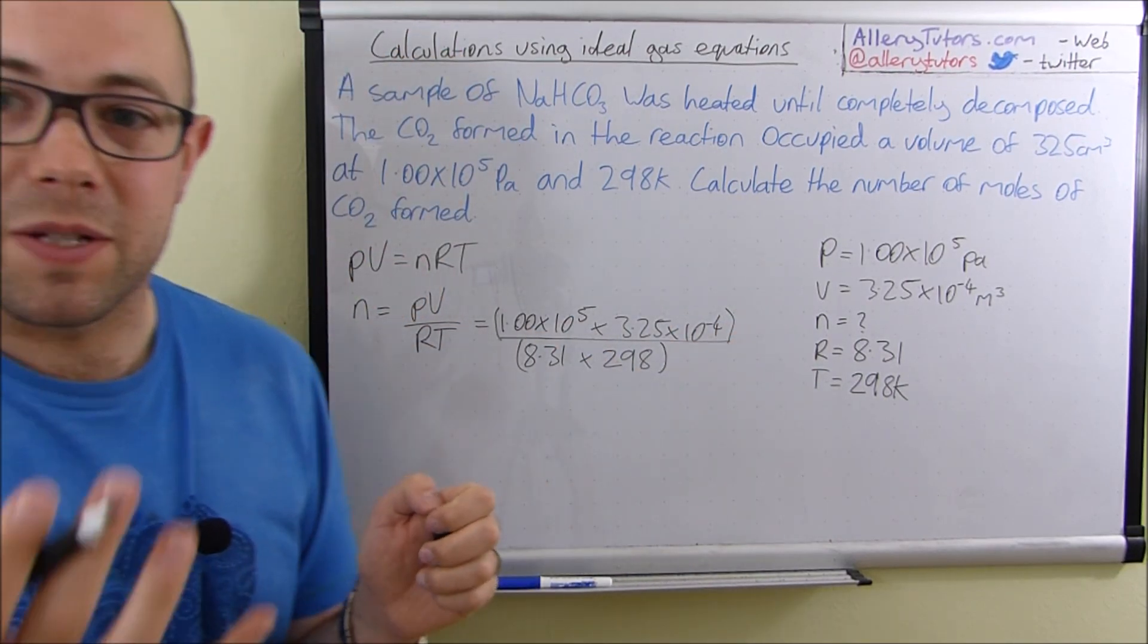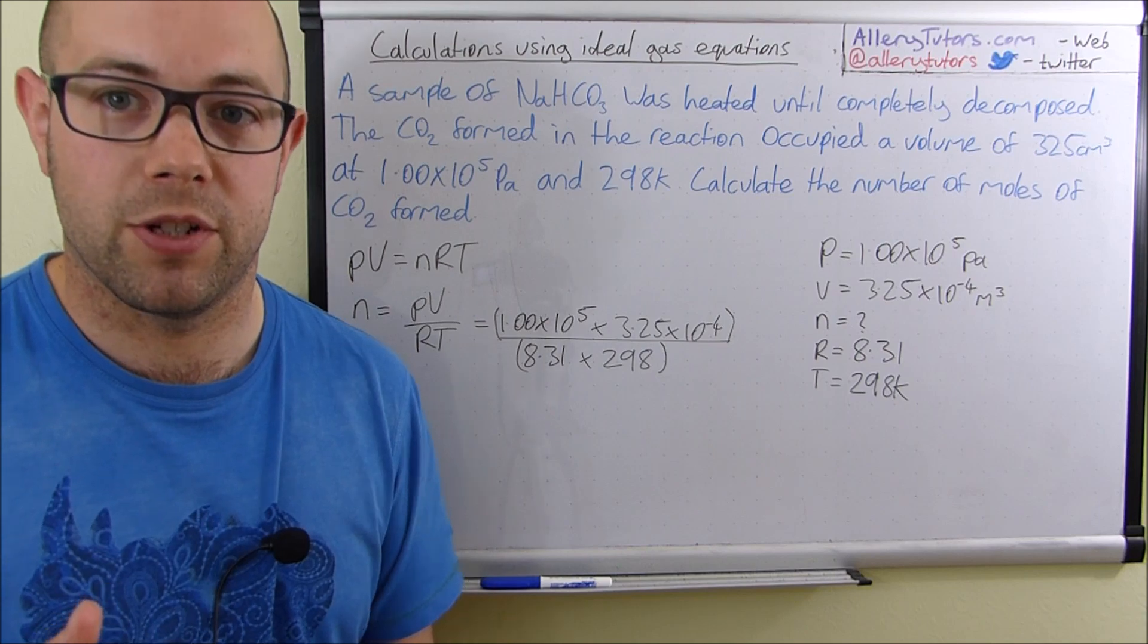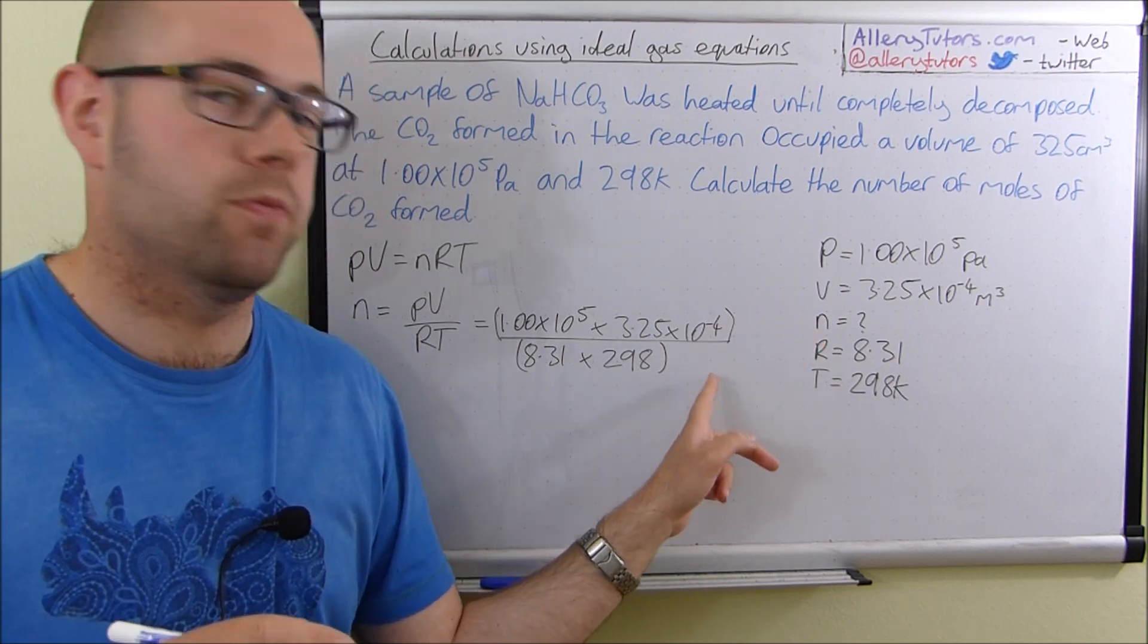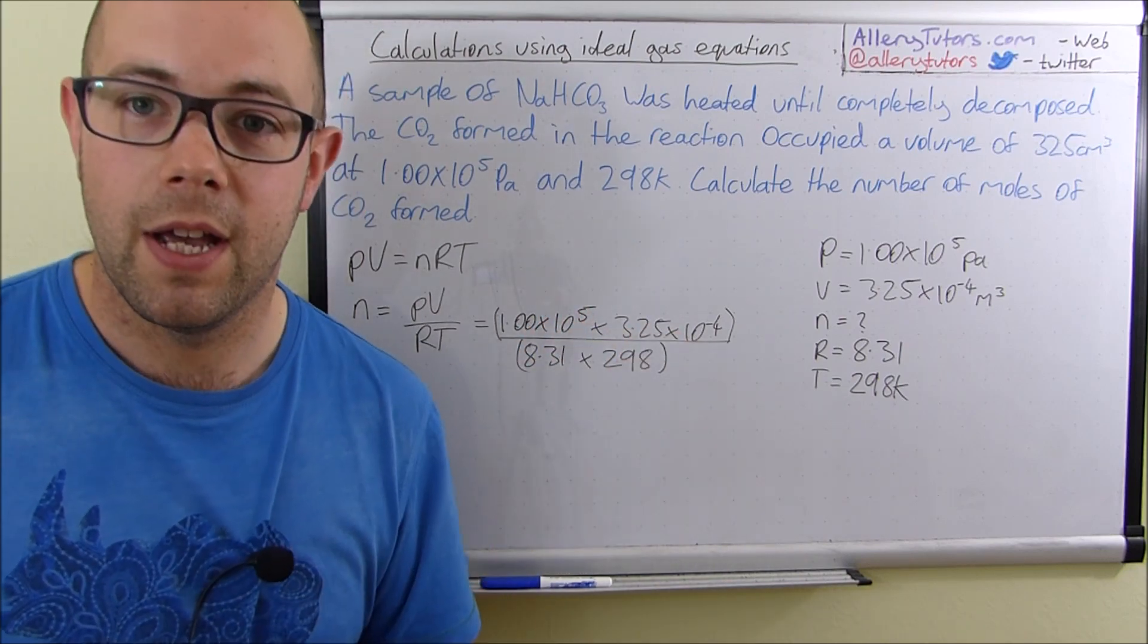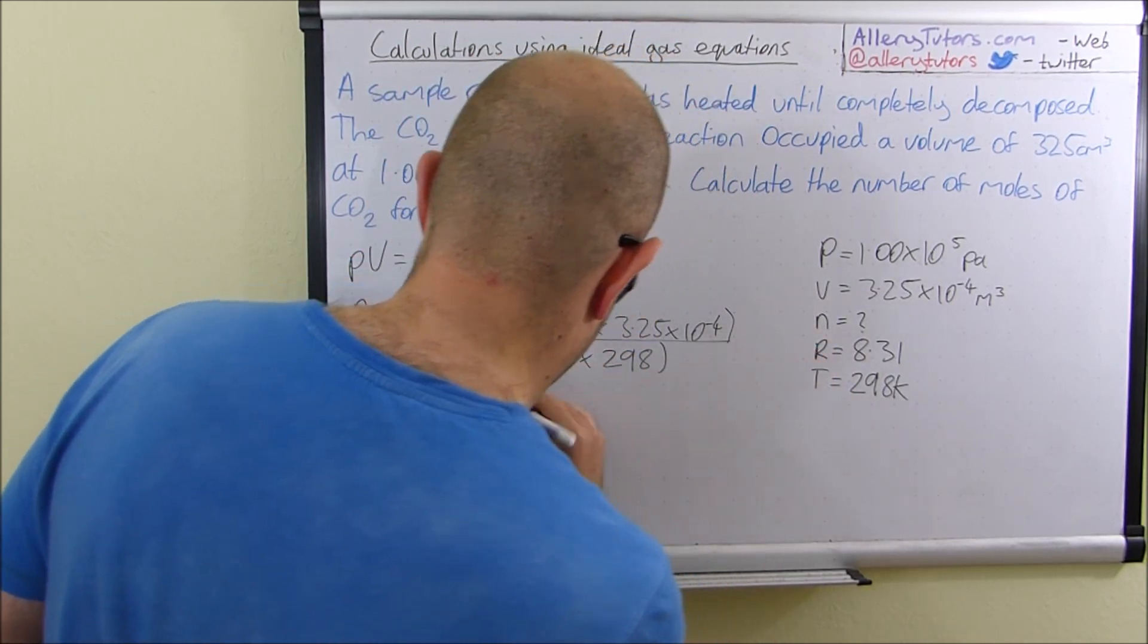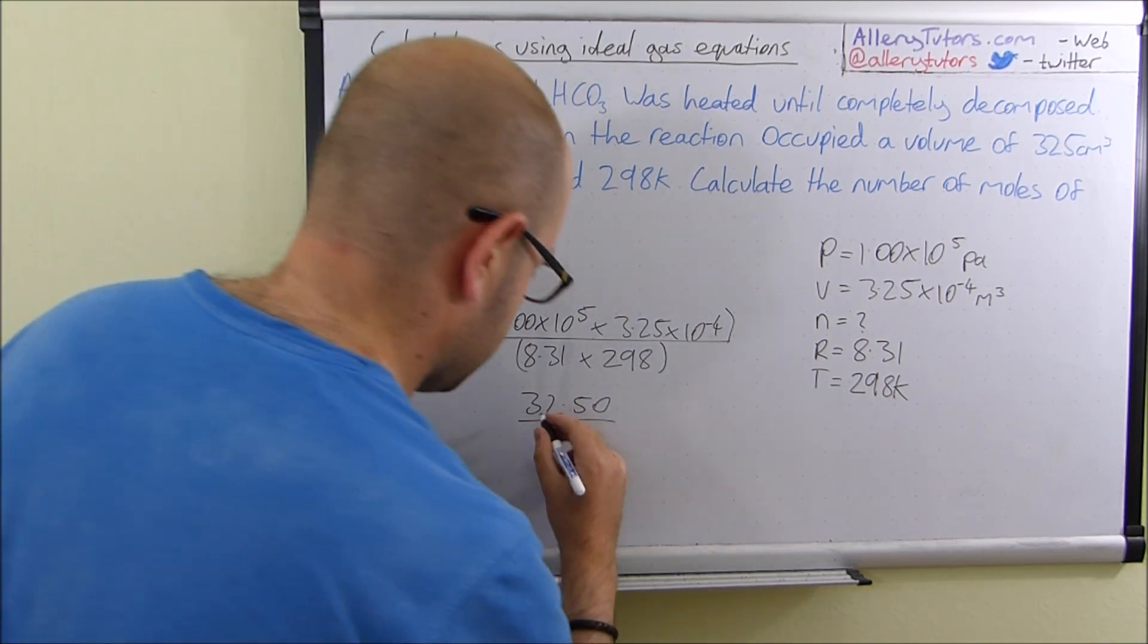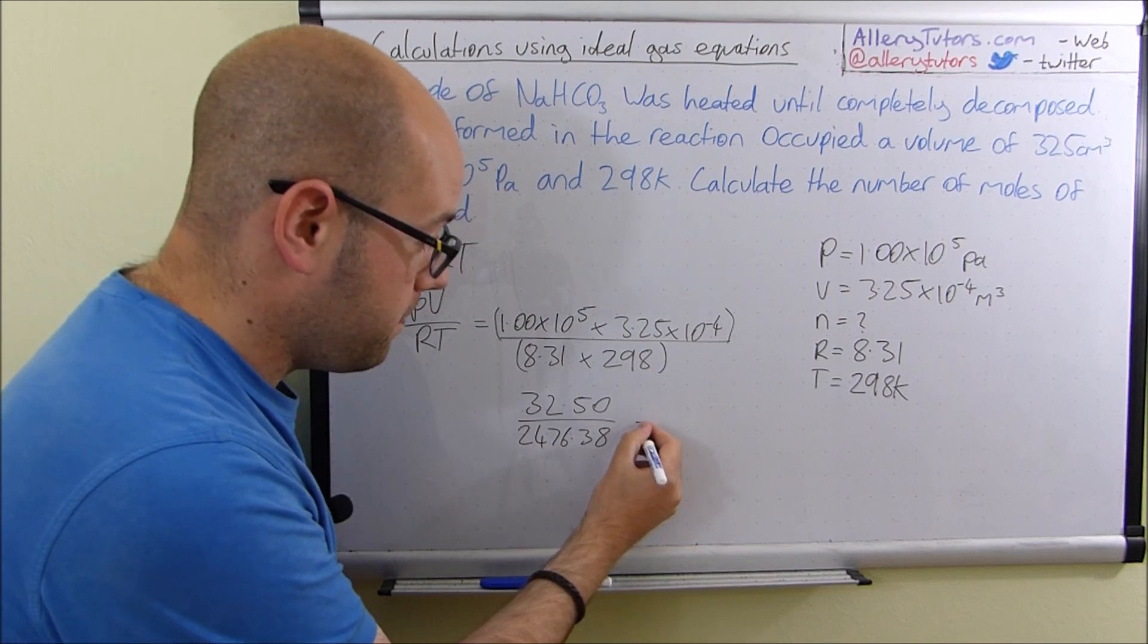Now, with these equations, because they're so big, it's probably easier if you work out the top line first, and then work out the bottom line, and then divide the two numbers from each other. Rather than trying to put all this in the calculator and risk maybe mispressing a button or putting the numbers in the wrong way around, it's easier just to work out the top row first, get your answer there, and then work out the bottom row, get your answer there, and then just divide it as a normal sum. So if we do 1 times 10 to the 5 times by 3.25 times by 10 to the minus 4, we should get a value of 32.50. And then if we do the same at the bottom, 8.31 times by 298, that should give us 2476.38.